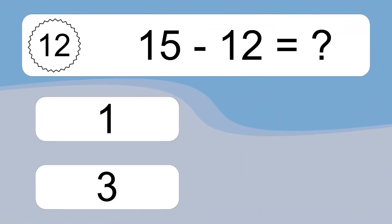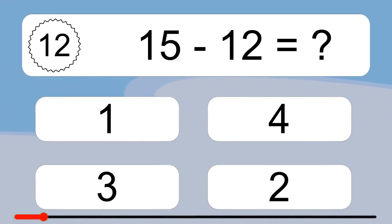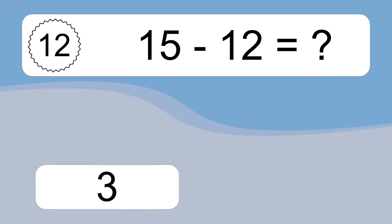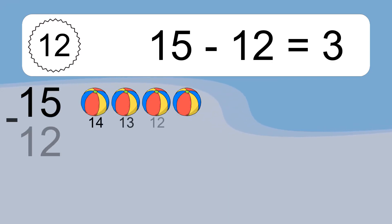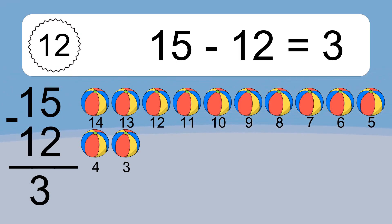15 minus 12 equals what? 15 minus 12 equals 3. Let's count it: 14, 13, 12, 11, 10, 9, 8, 7, 6, 5, 4, 3.